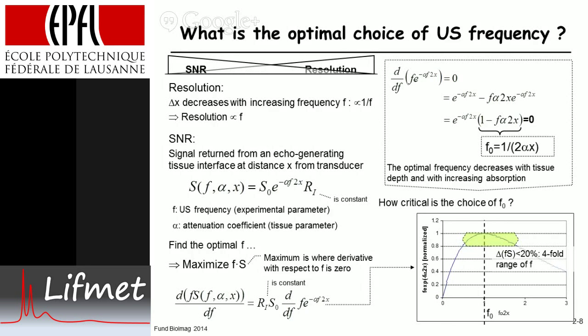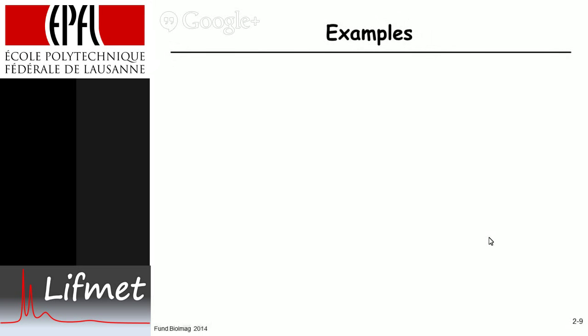So if the change in f times s is less than 20 percent, one gets a four fold range of frequency. So the good news is if the distance varies by a factor of two you can still use the same frequency, or if the attenuation coefficient varies by a factor of two you can still use the same optimal frequency.